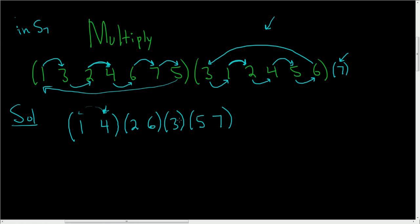So that's it. We can eliminate the 3 from our answer because 3 is fixed in the result. So this is (1 4)(2 6)(5 7). And that's it. I hope that made sense.